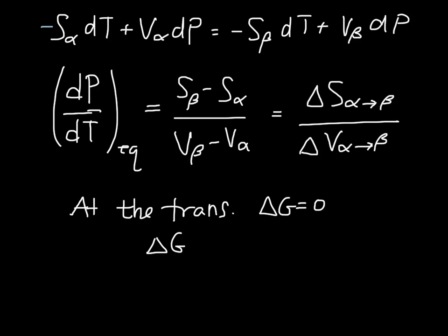So if we write delta G equals H minus T delta S, this is equal to zero, which gives that delta H equals T delta S. So we can substitute into here, basically delta H divided by T.